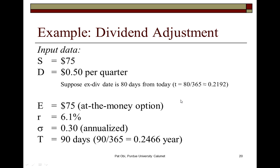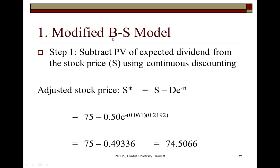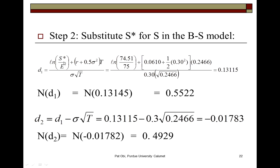With everything in place, using the modified Black-Scholes model, what we do is adjust the stock price by the amount of the dividend. So let's call the adjusted stock price S*, which is going to be the stock price minus the present value of the dividend. Using continuous discounting, this becomes an adjusted stock price of approximately $74.50. We use this in the Black-Scholes model, beginning with D1, as you see up there.